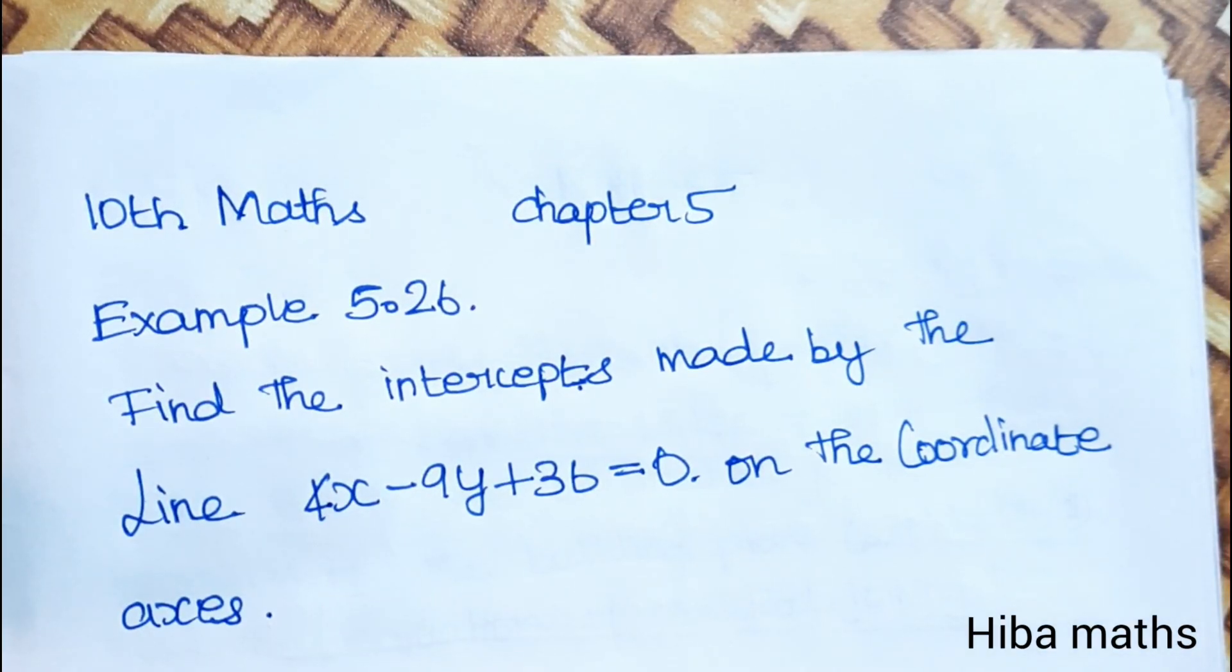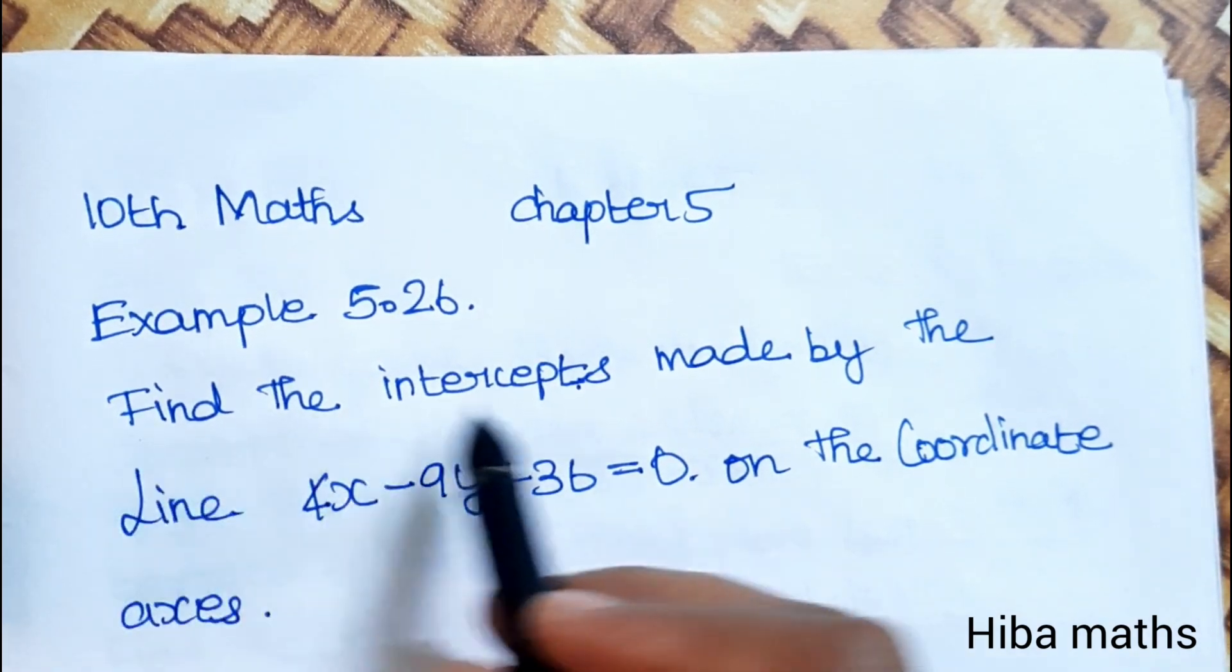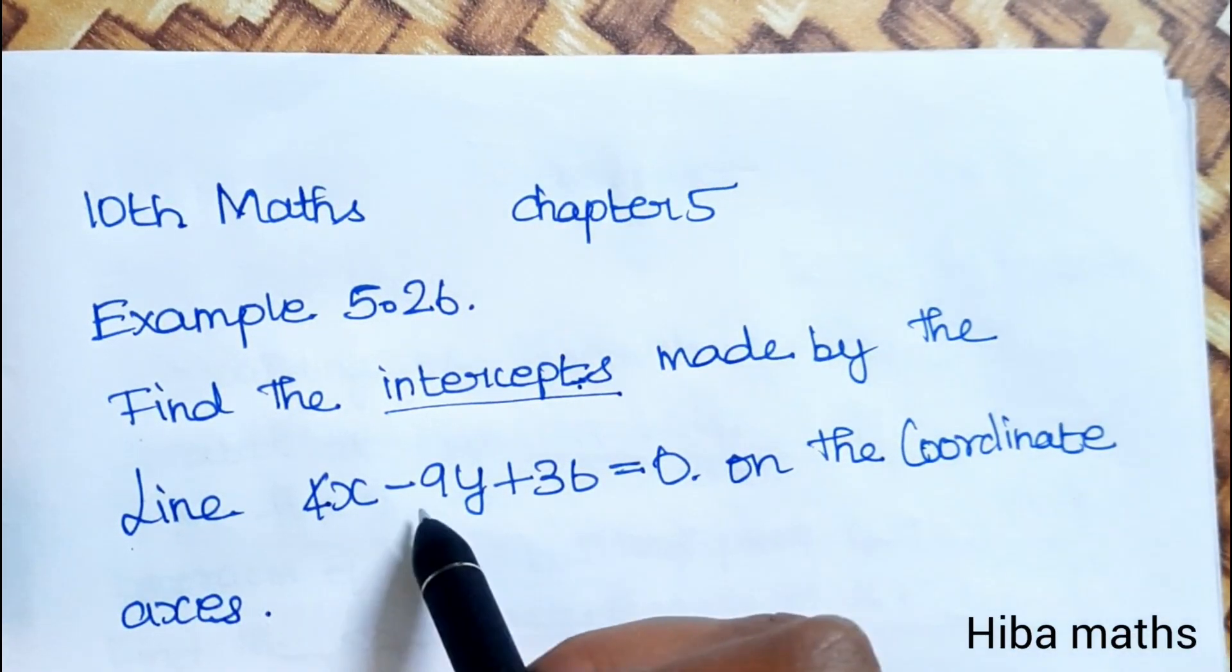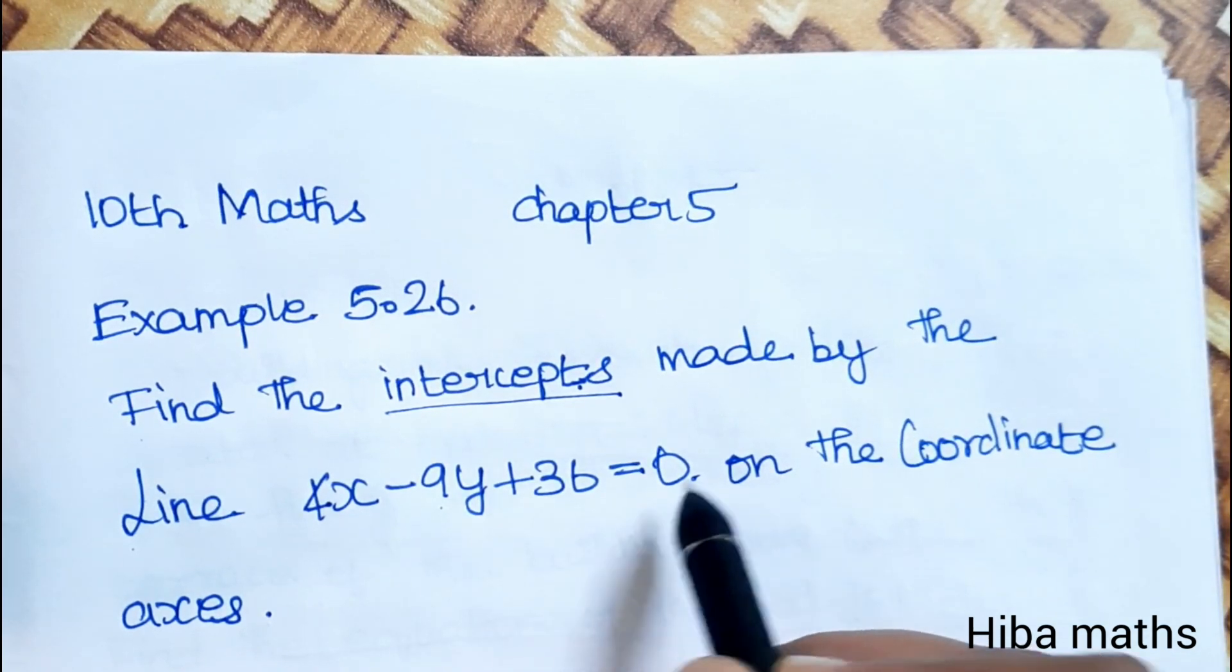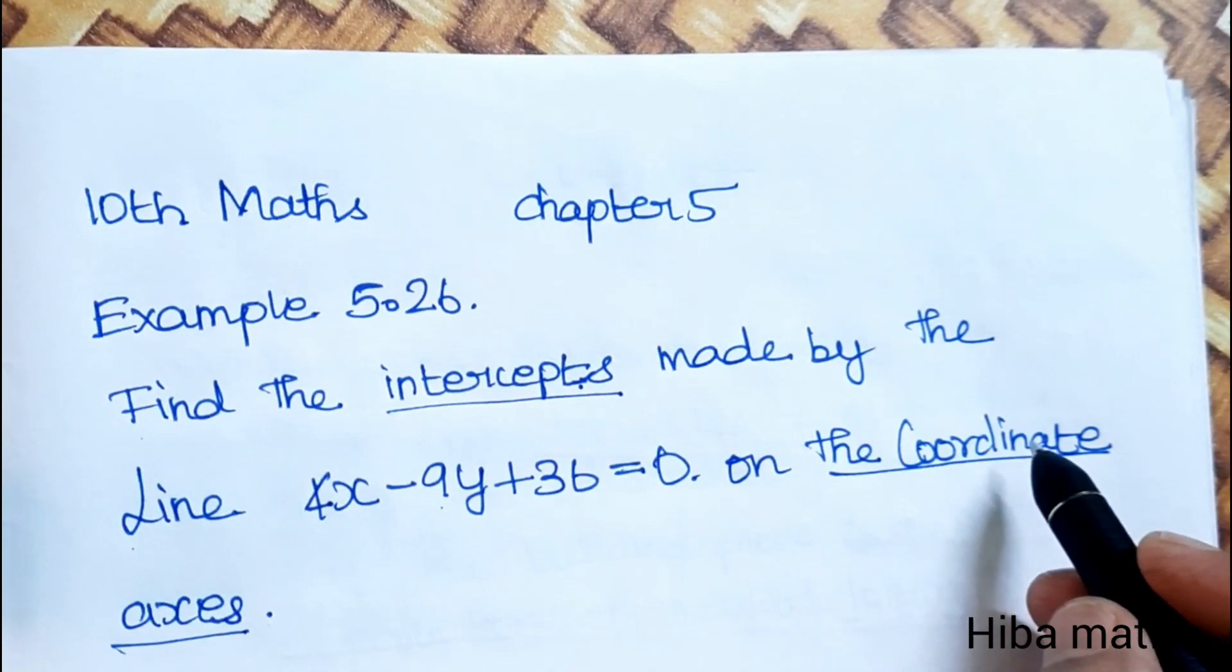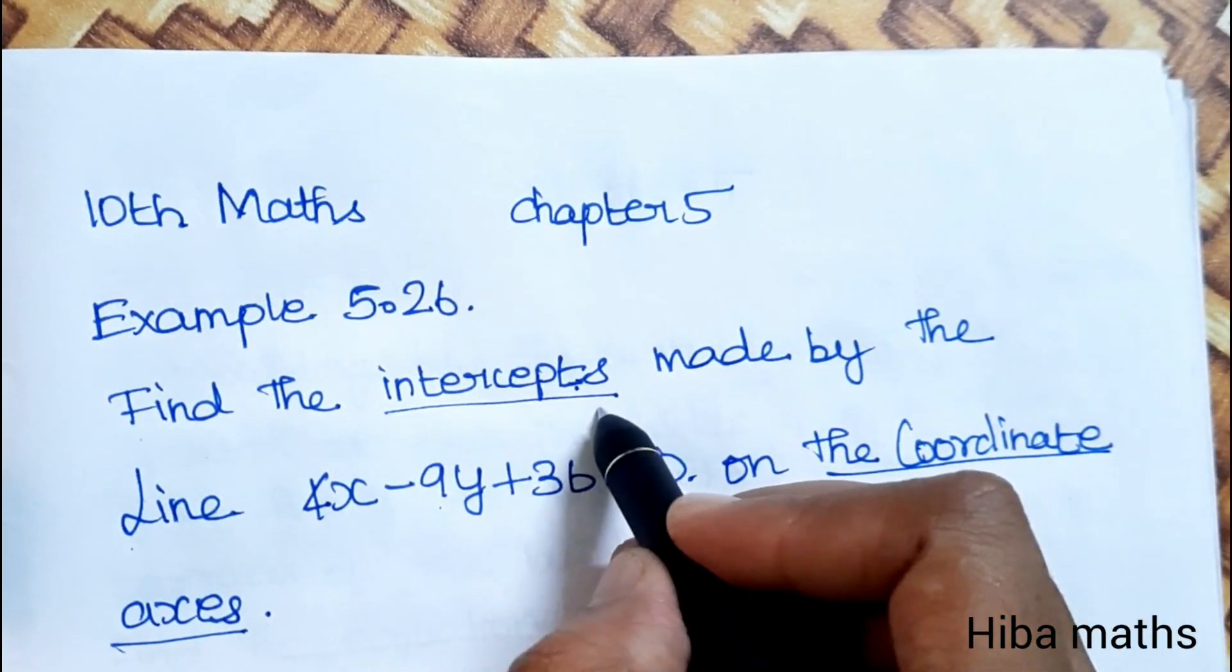Hello students, welcome to Hiba Maths, 10th standard maths chapter 5, example 5.26. Find the intercepts made by the line 4x minus 9y plus 36 equal to 0 on the coordinate axes. We need to find the x-axis and y-axis intercepts a and b.